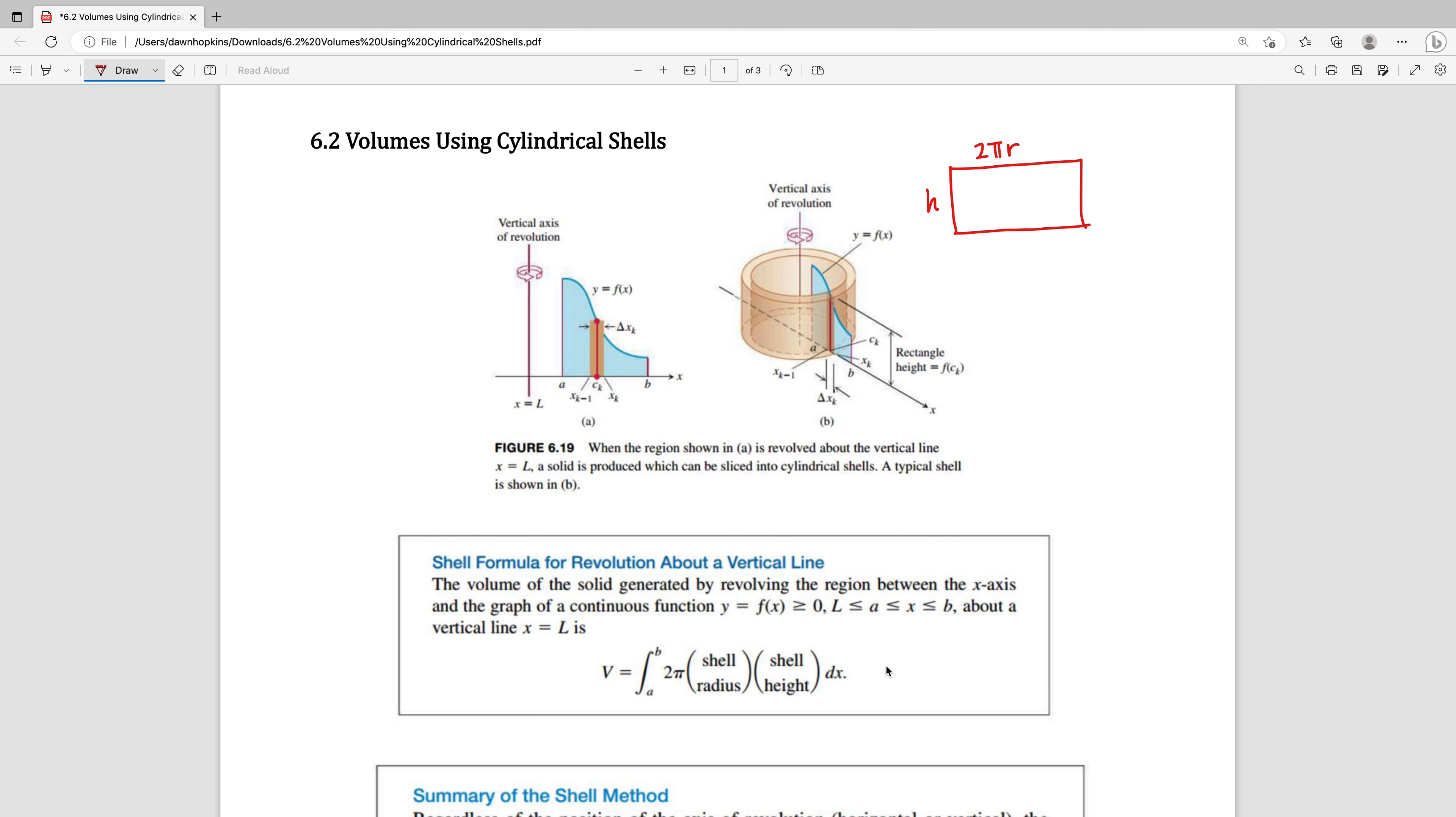That is where the formula for the shell method comes from. The volume is equal to 2 times pi times the radius times the height. There is nothing super fancy about where this formula comes from. It's just using that idea of a cylinder.